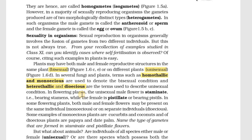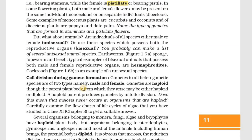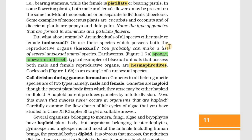In flowering plants, we have the male flower called staminate and the female flower with pistils – the female reproductive structure. For animals, bisexual and unisexual categories also apply. Bisexual animals like sponge, tapeworm, and leech have both male and female reproductive organs in one organism – they are called hermaphrodites. A unisexual animal example is the cockroach.